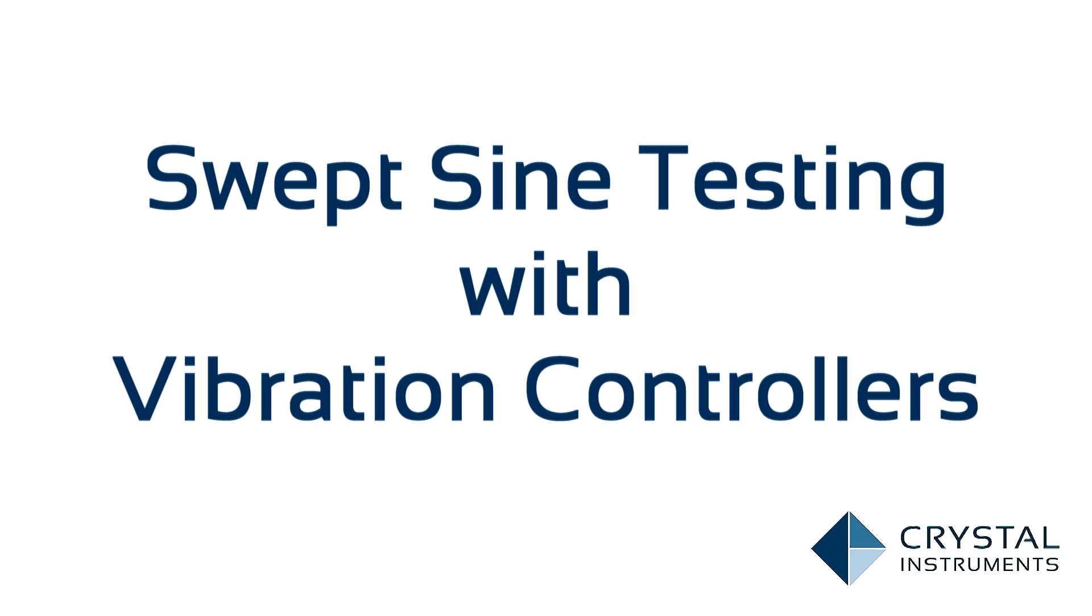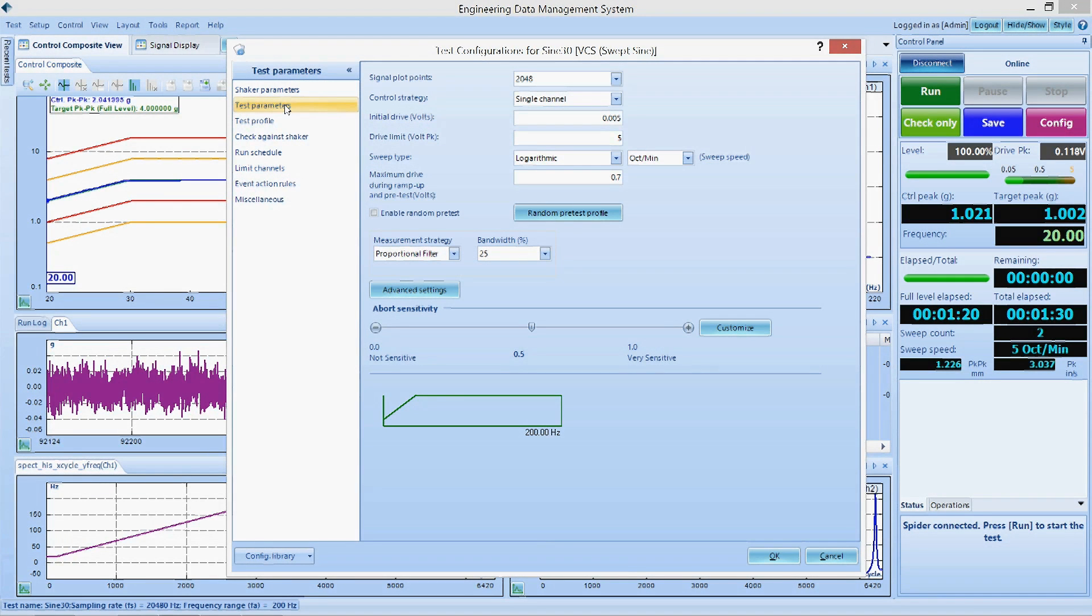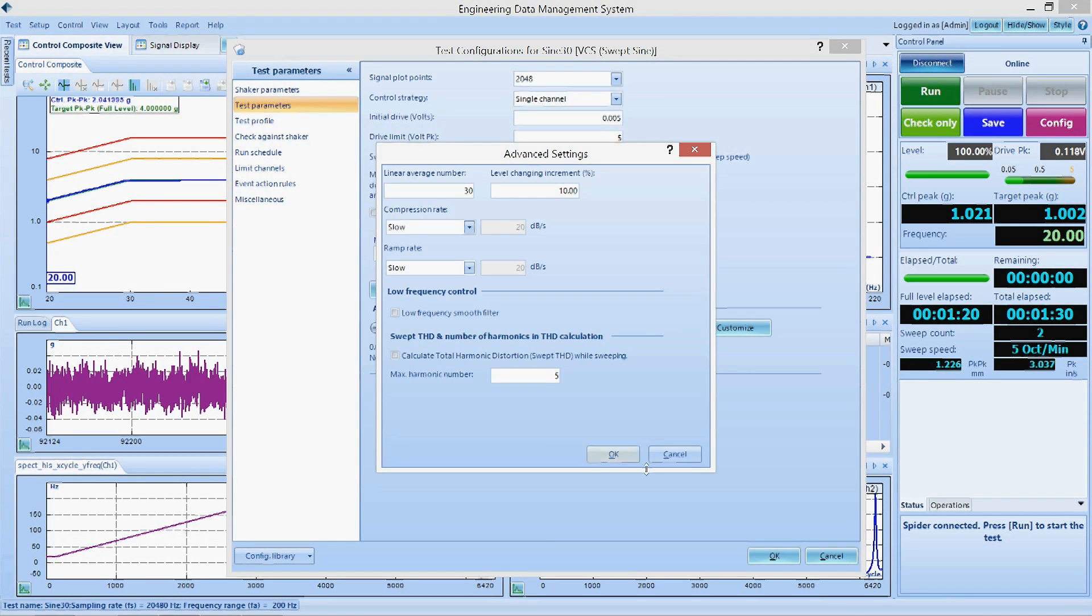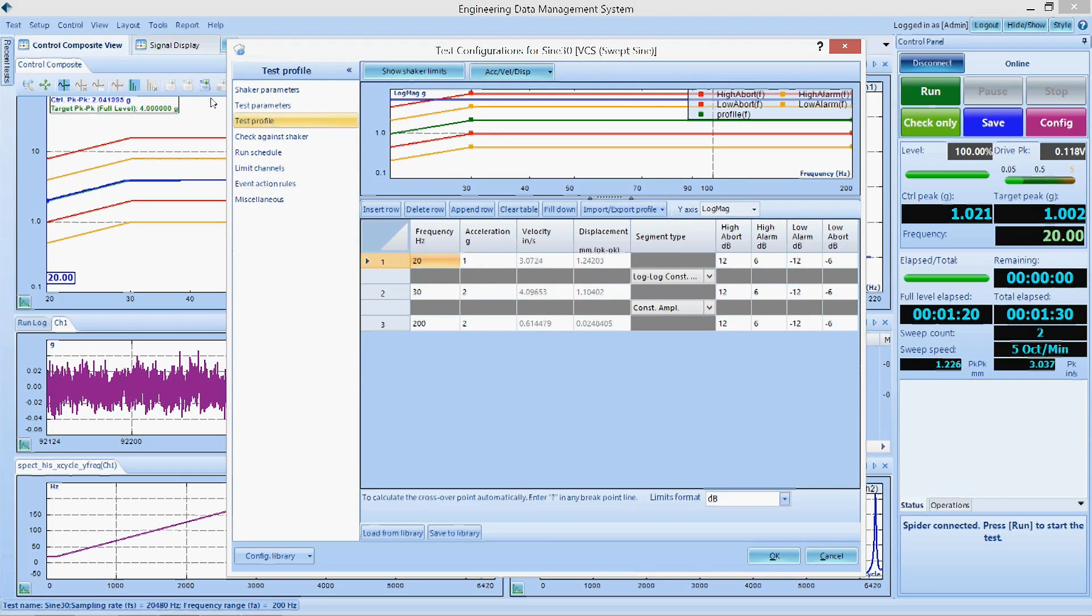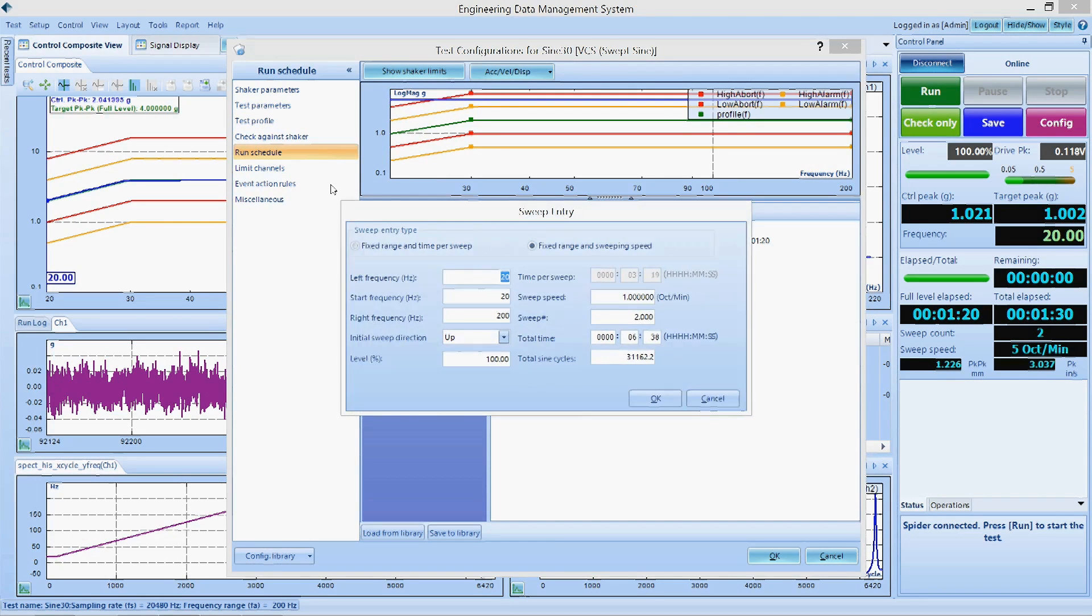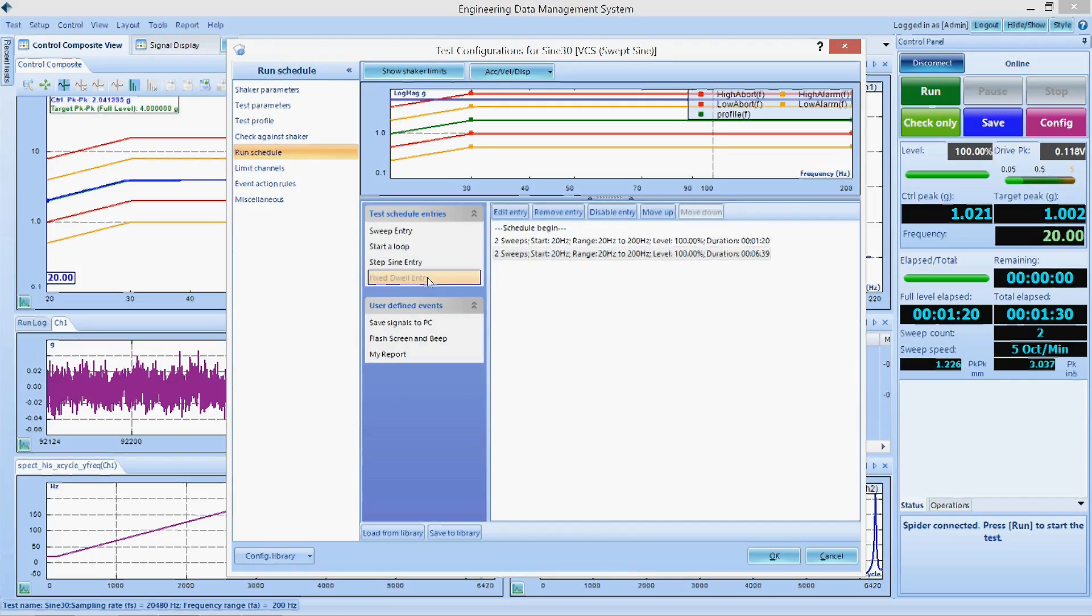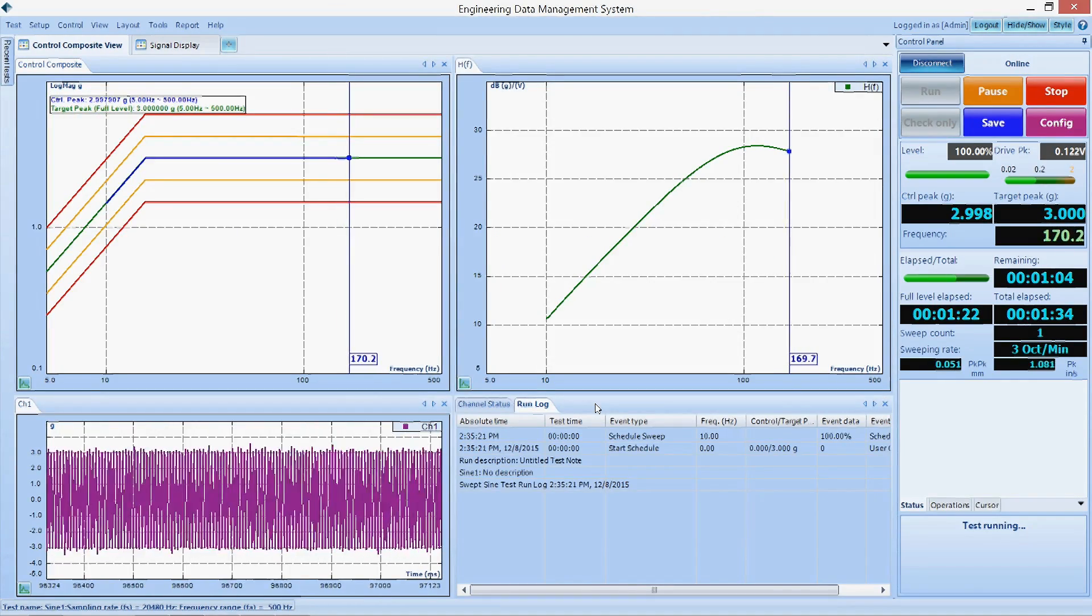Whereas a random test generates many frequencies at once, a swept sine test generates only one frequency and sweeps this frequency through a preset range. The test profile is a graph of amplitude rather than frequency.